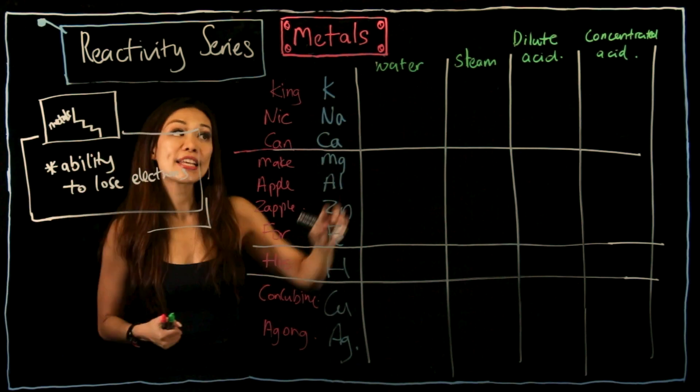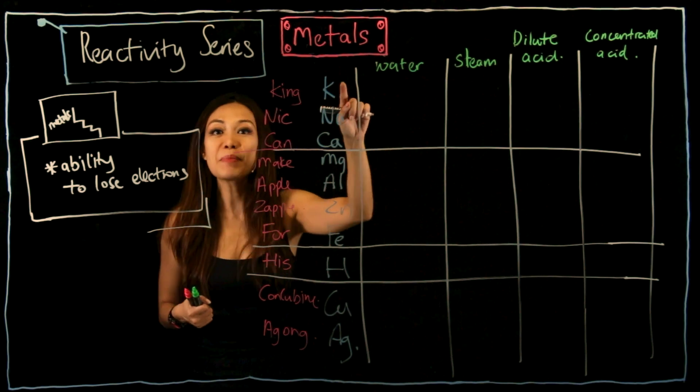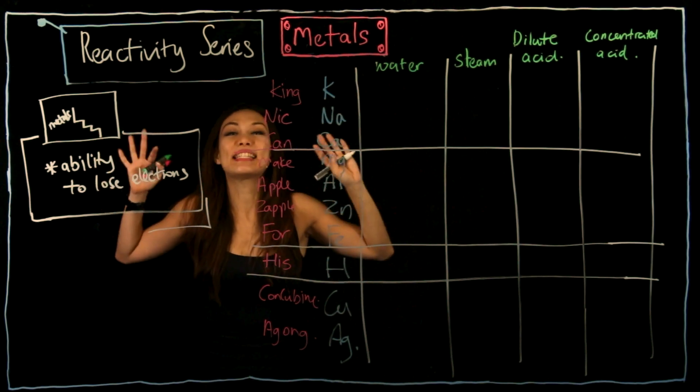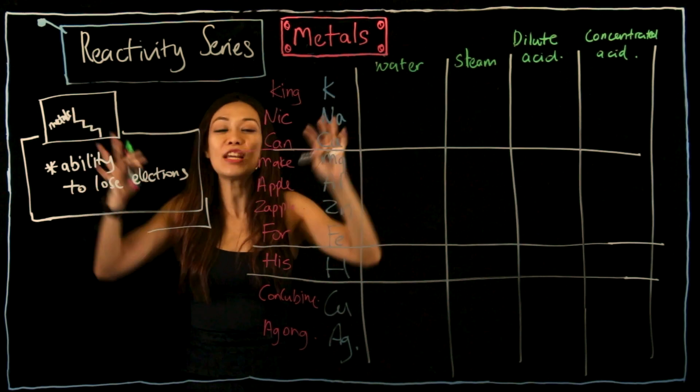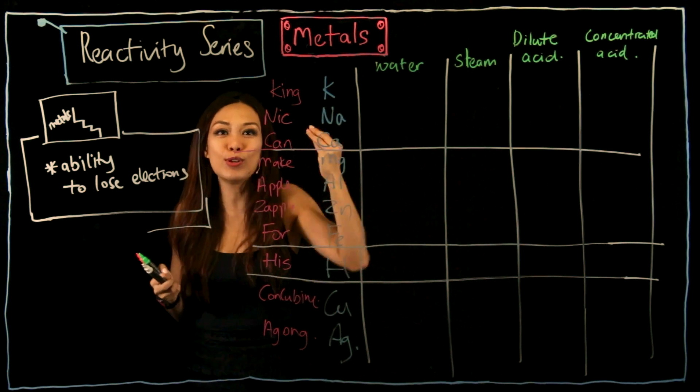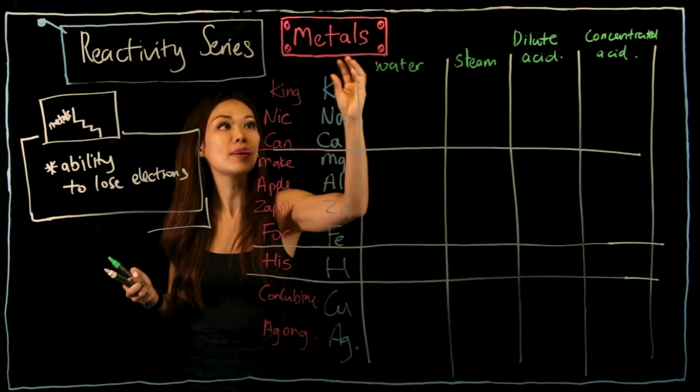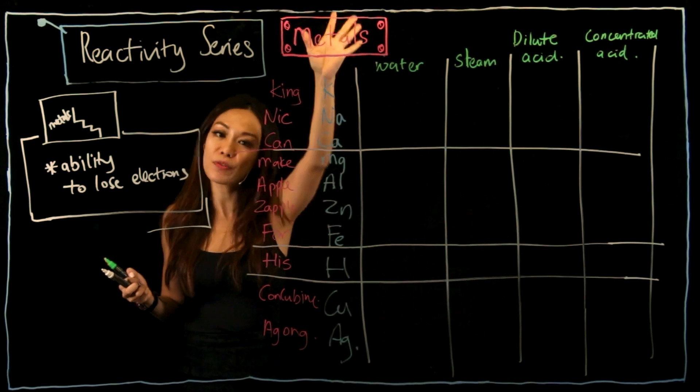So if I say this is the most reactive, meaning potassium has the most ability, or I should say it's the easiest to lose that electron. Therefore, it makes potassium the most reactive in this table.